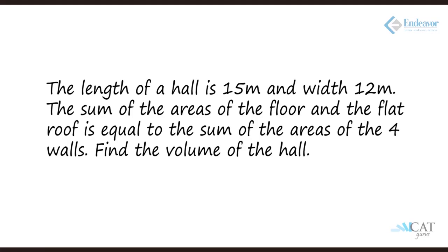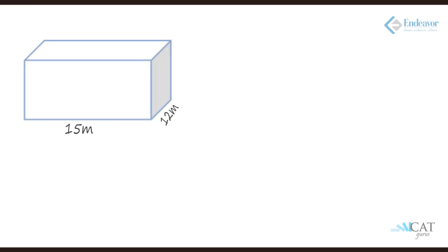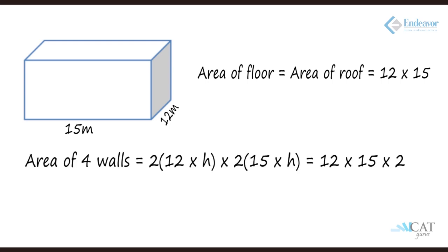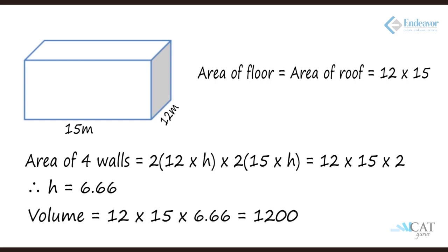The length of a hall is 15 meters and the width is 12 meters. The sum of the areas of the floor and the flat roof is equal to the sum of the areas of the 4 walls. Find the volume of the hall. The area of floor and ceiling is 12 into 15 into 2. Assuming height h, the four walls give 15h into 2 plus 12h into 2. Setting these equal gives h equal to 6.66 meters. So the volume is 15 into 12 into 6.66, which gives 1,200 cubic meters.